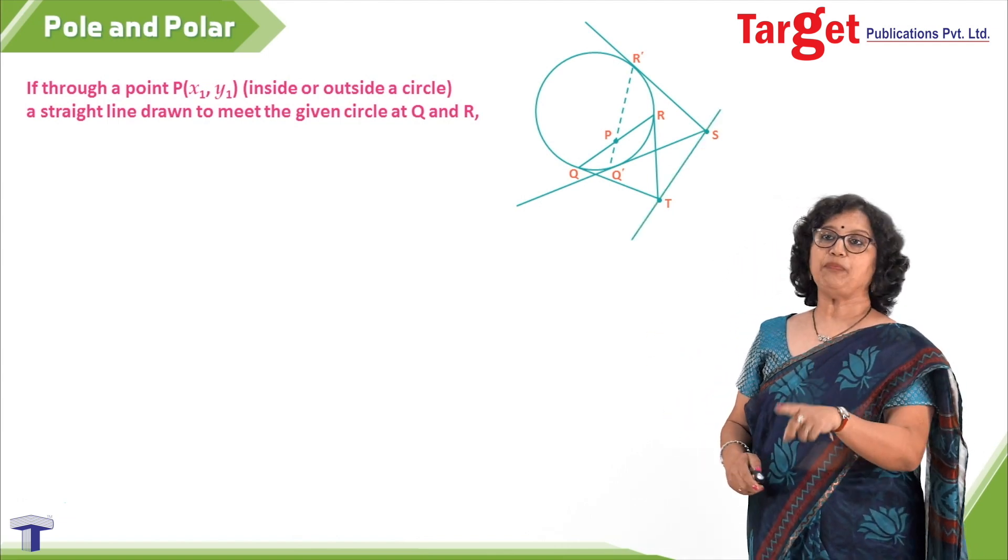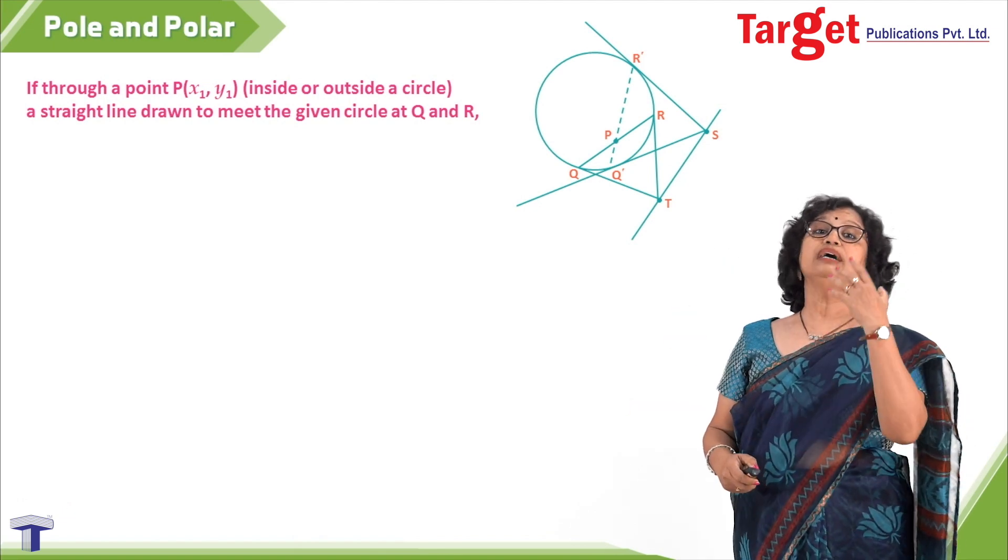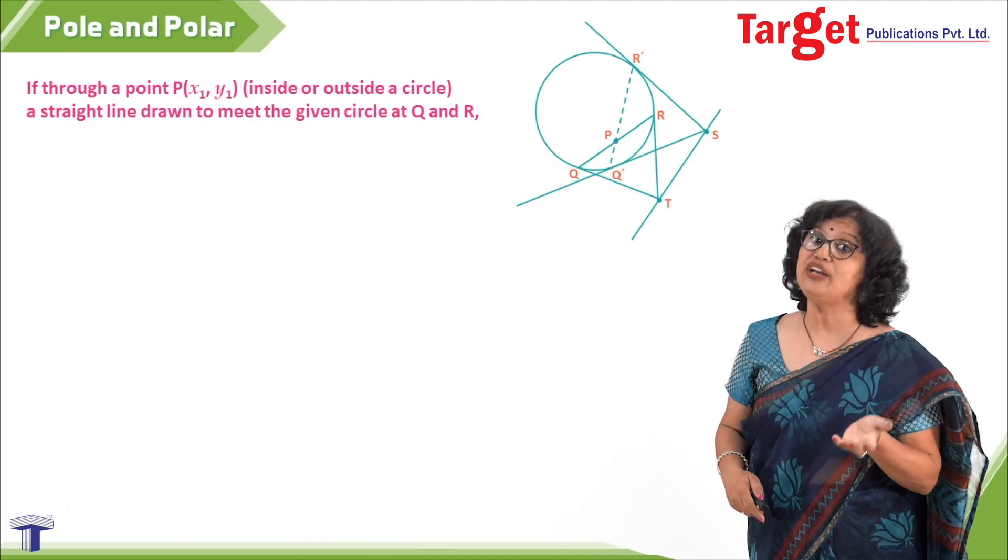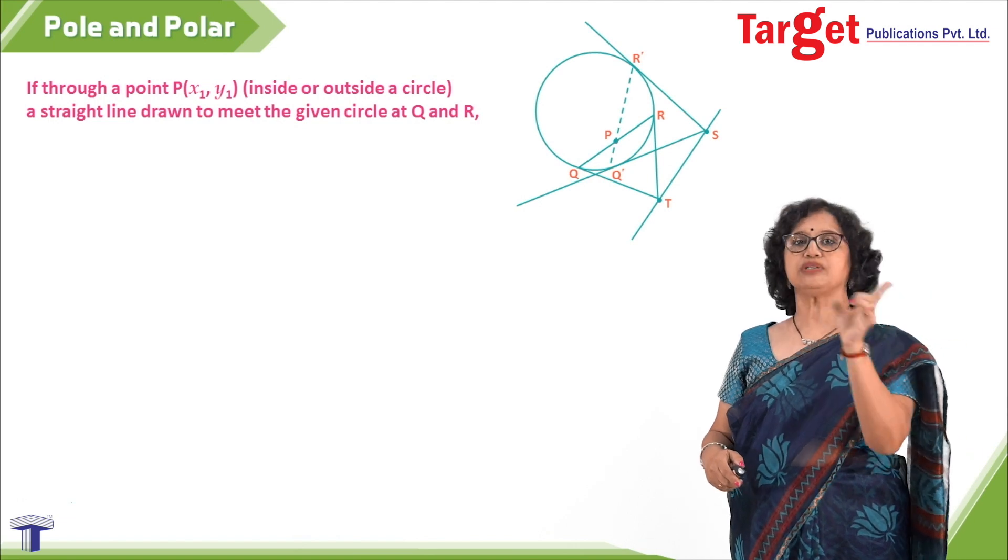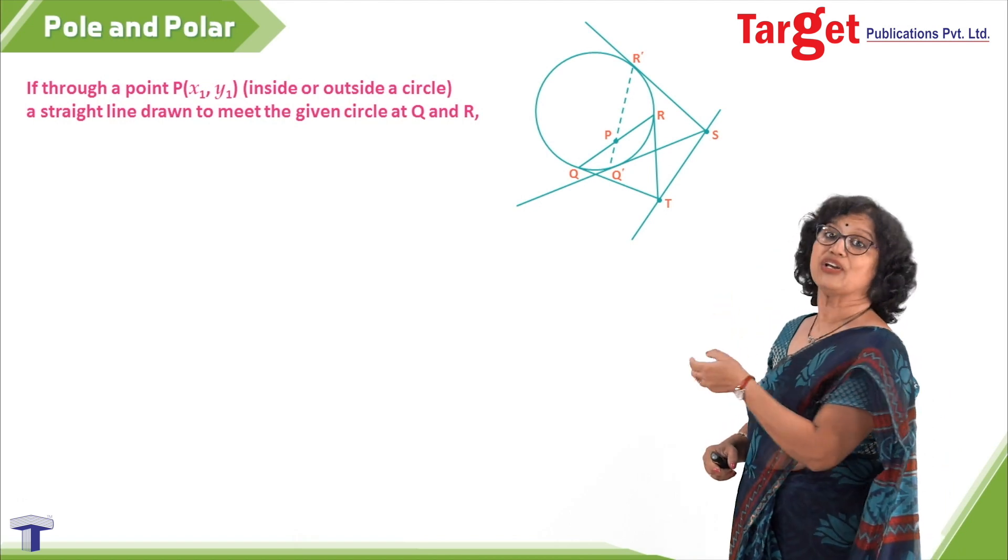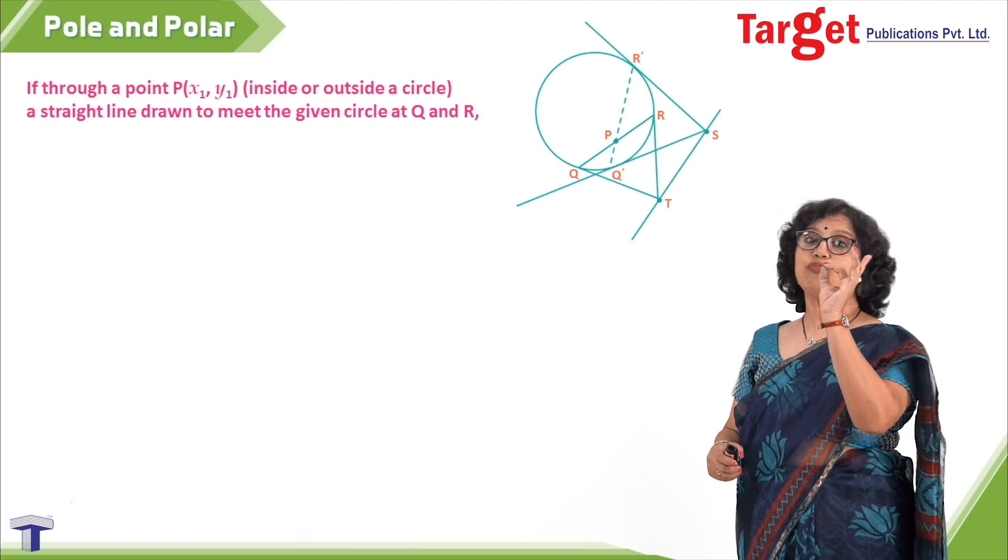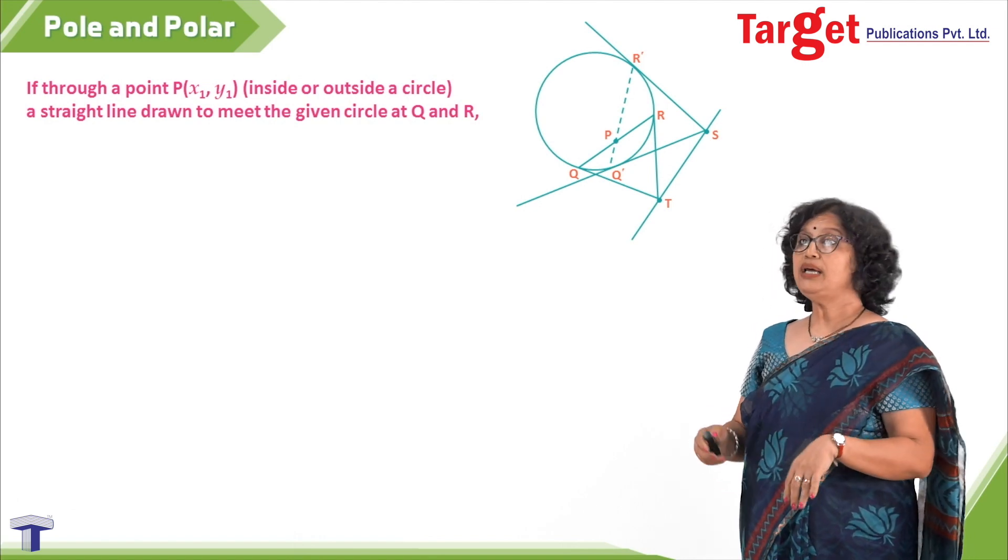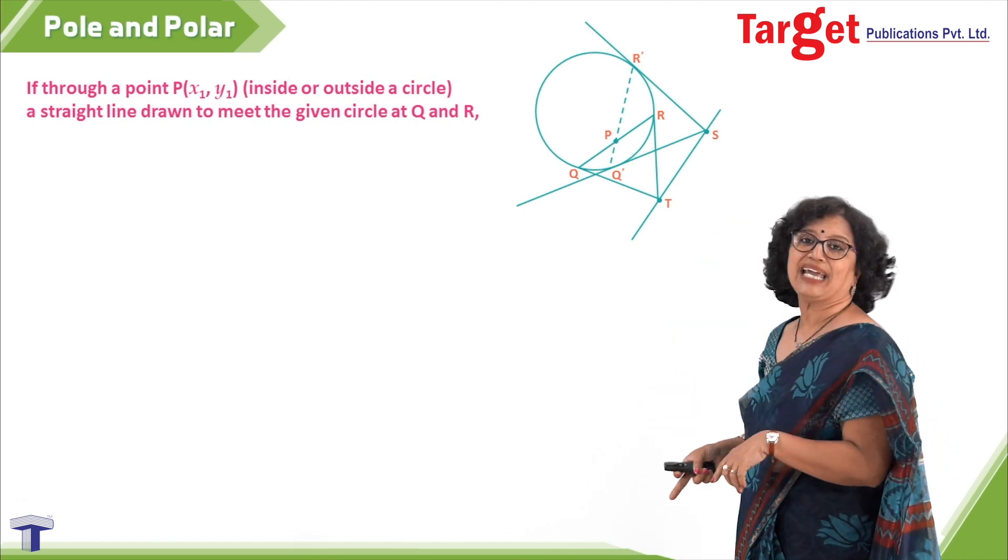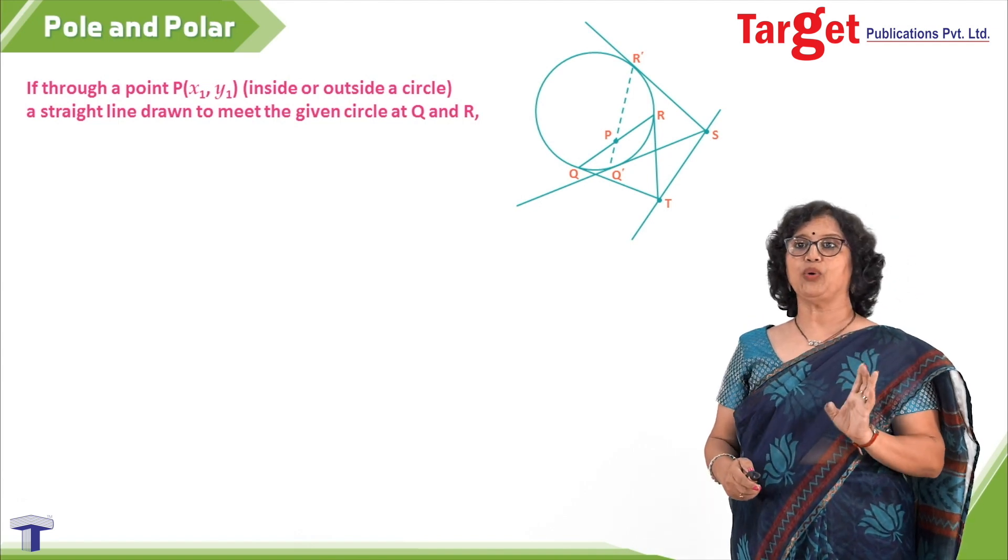Again I repeat, if through point P inside or outside a line is drawn which meets the circle at Q and R, and if further I draw the tangents at positions Q and R and those tangents meet at point T, then T is a moving position and the locus of point T can be understood. What I have drawn here is that locus, which happens to be a line.